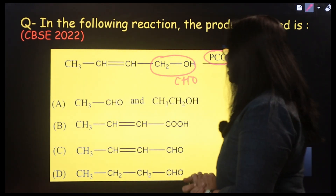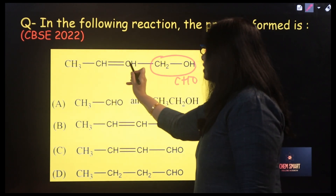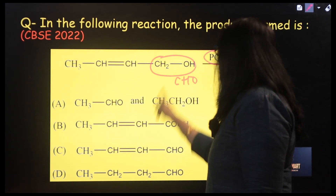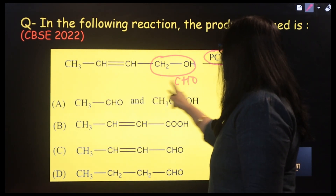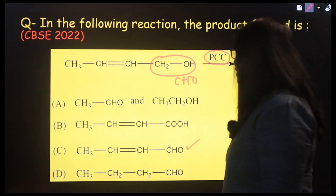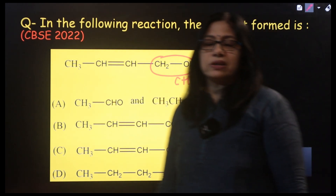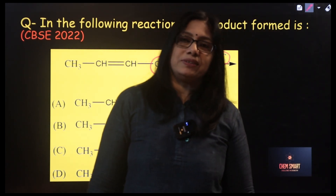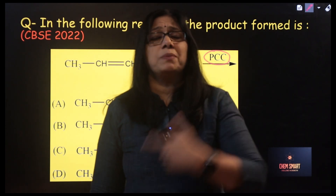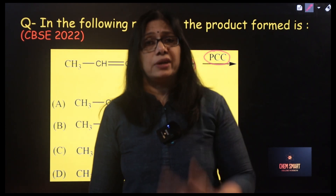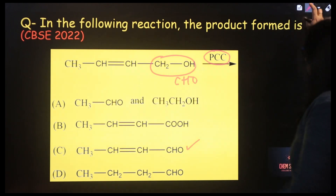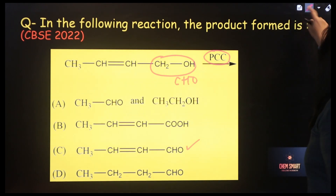The CH=CH double bond will be retained, and the primary alcoholic group changes into CHO. So the double bond is preserved and the alcohol is oxidized to an aldehyde — that is the answer. This is the advantage of using PCC. The same reaction is present in your textbook. That is the application.